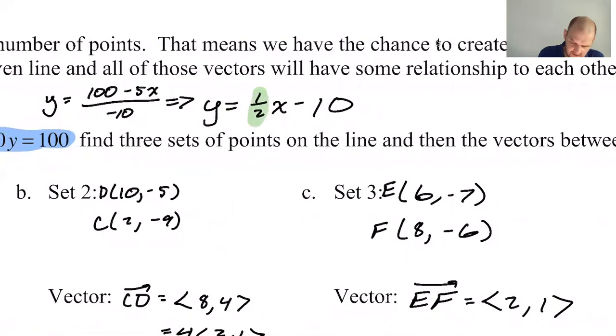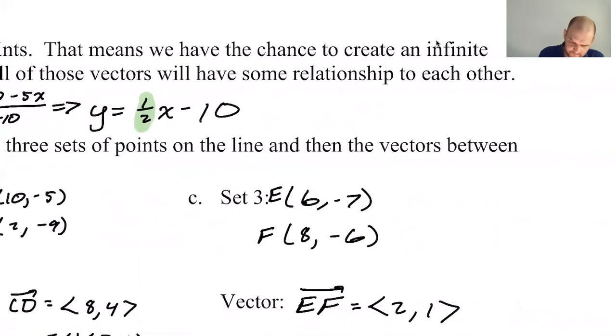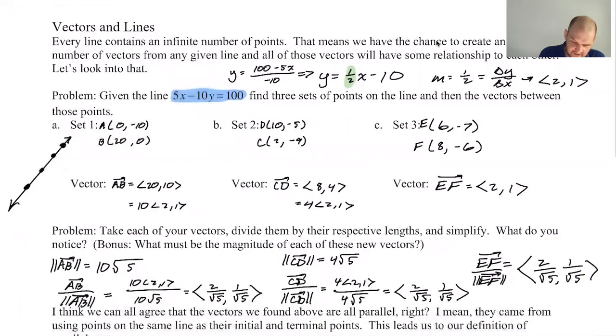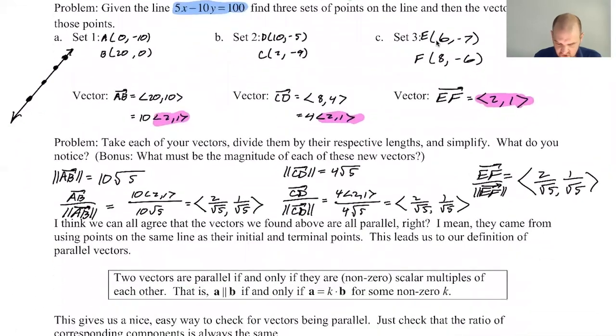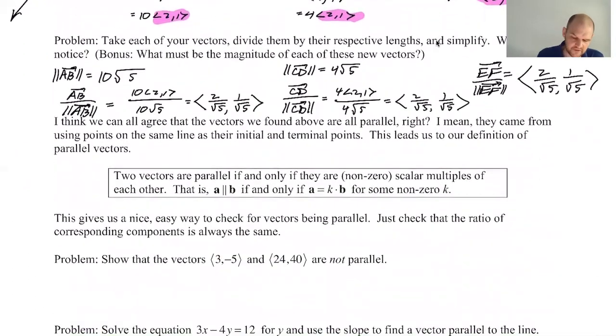The slope of this is 1 half. So m is 1 half, which is delta y over delta x. So delta x is 2, delta y is 1, and where did we see that vector every single time? <2,1>, <2,1>, <2,1>. No matter what vector we started with, it became a scalar multiple of the vector that you can kind of pull right off of the slope. All of these ideas are super important, and we're going to return to all of them.